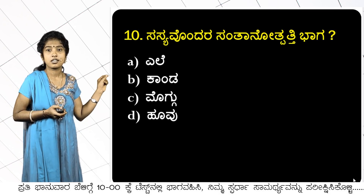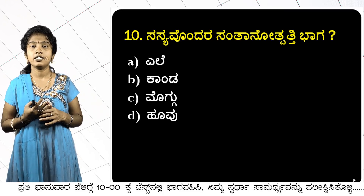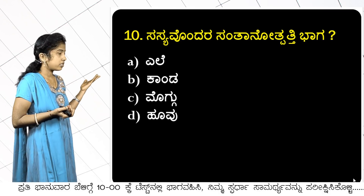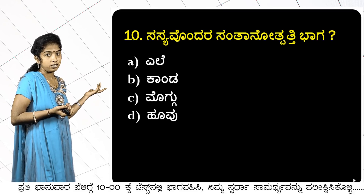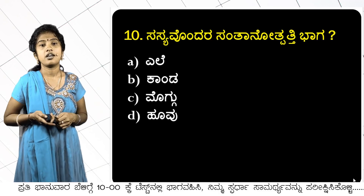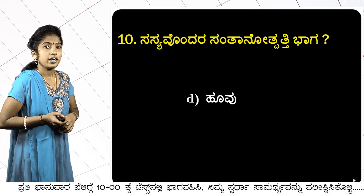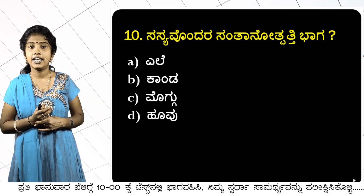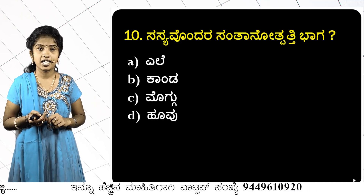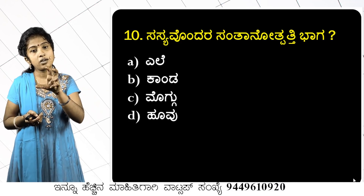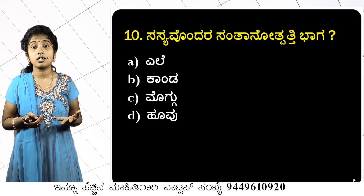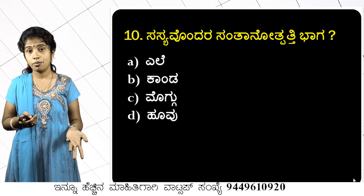Next: which part of a plant is used for vegetative reproduction? The options are leaves, stem, bud (moggu), and flower. The correct answer is flower — a flower is not used for vegetative reproduction. Bryophyllum leaves are used for reproduction.